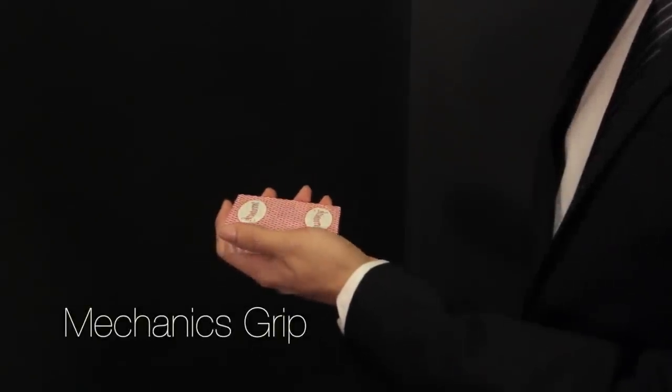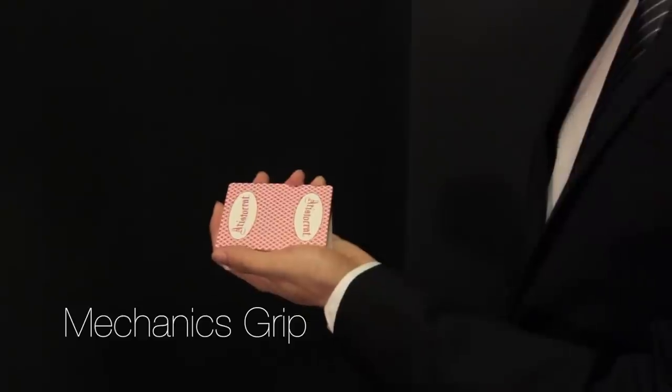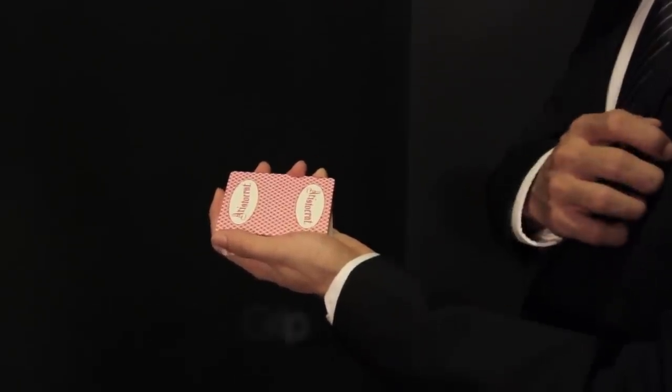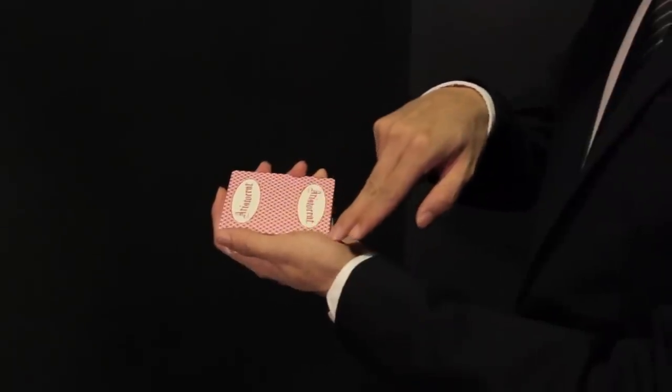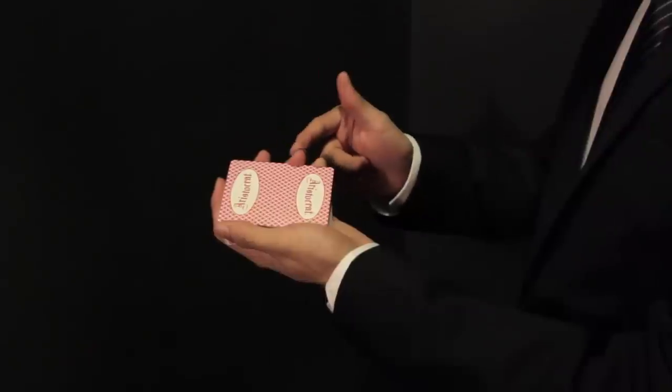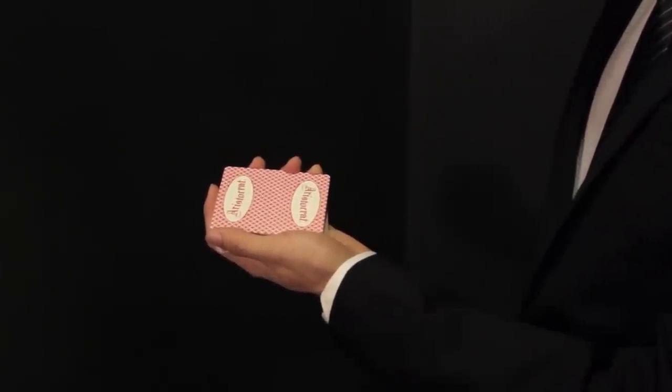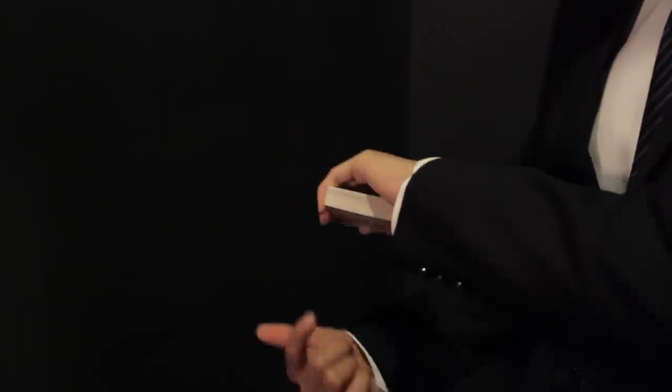Mechanics grip. This is the default position when holding a pack of cards. It is usually held in your non-master hand. Your thumb is along the long edge, your next finger on the top short edge, and the last three fingers on the opposite long edge. Make sure there is a gap between the pack and your palm.